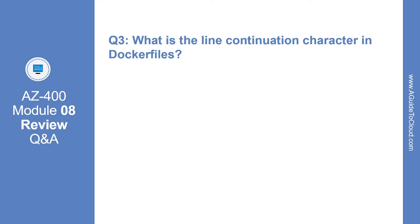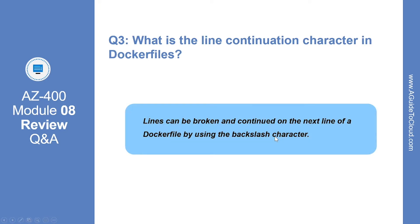What is the line continuation character in Dockerfiles? The answer is: lines can be broken and continued on the next line of a Dockerfile by using the backslash character.